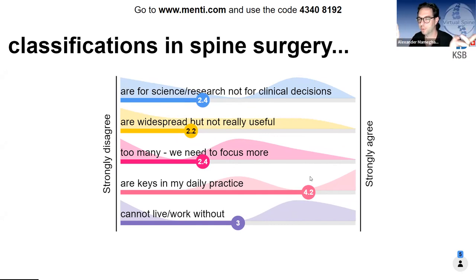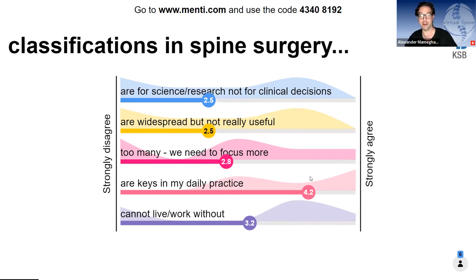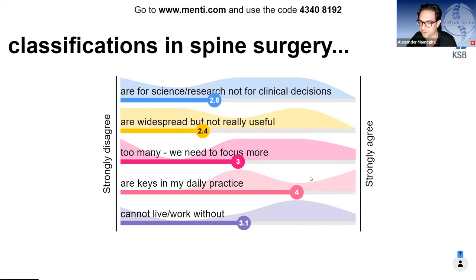The thing with spondyloptosis is this isn't binary — it's grade five, but is this spondyloptosis or not? Is this yes or no? This is one of these things we always look at in the TL classification of injuries: is there alignment, is there a luxation or not? We just say C. It's easy to make these classifications. Looking at the poll results, many say in my daily practice I need them, some say I cannot live without them, and many say we have too many and should focus more.